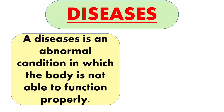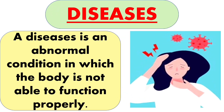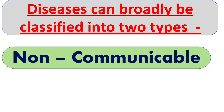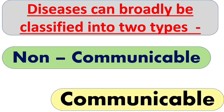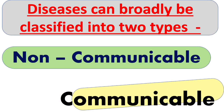So children, what is disease? Disease is an abnormal condition in which the body is not able to function properly. Disease can be caused by the malfunctioning of an organ, deficiency of some vitamins and minerals, or through germs. Disease can be broadly classified into two types: non-communicable disease and communicable disease. We have already learned about non-communicable disease, and today we will learn about communicable disease.